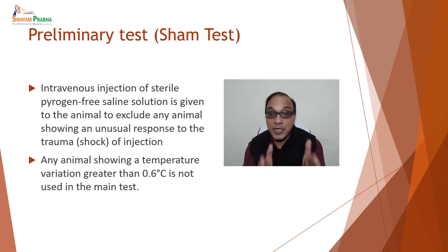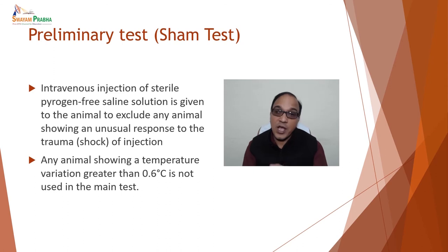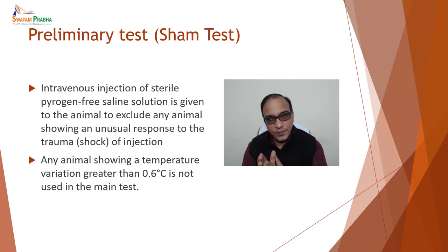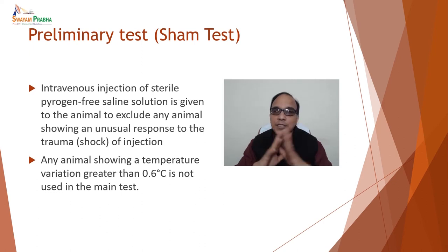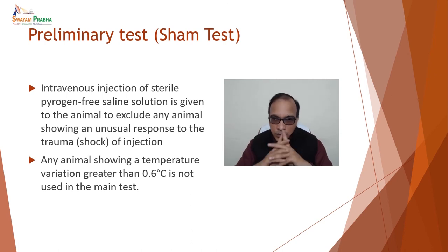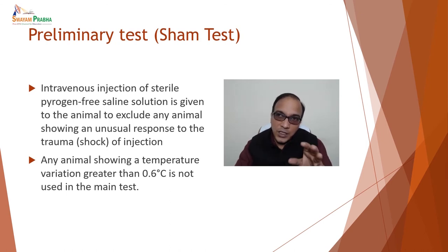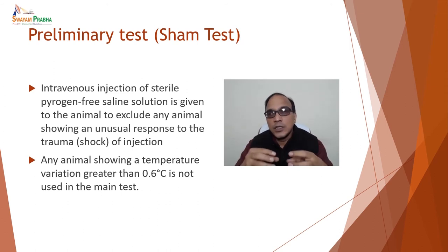The first is the rabbit test, beginning with a preliminary sham test. In the sham test, an IV injection of sterile pyrogen-free saline solution is given to the animal to exclude any animal showing an unusual response to the trauma or shock of injection. Any animal showing a temperature variation greater than 0.6°C is not used in the main test. This preliminary test governs and finalizes which animals are used for the main test.